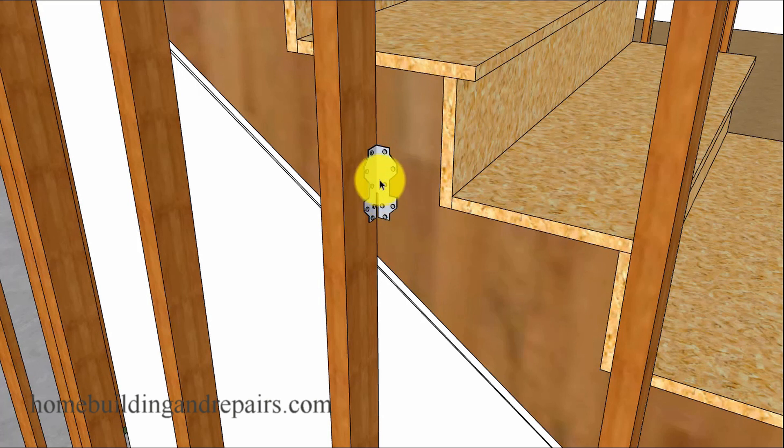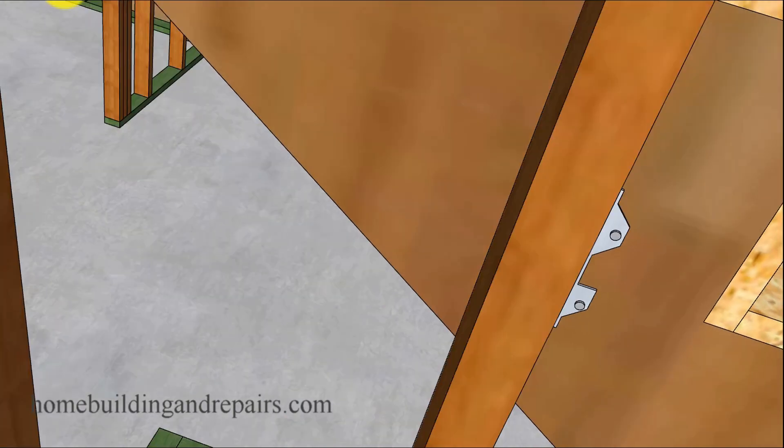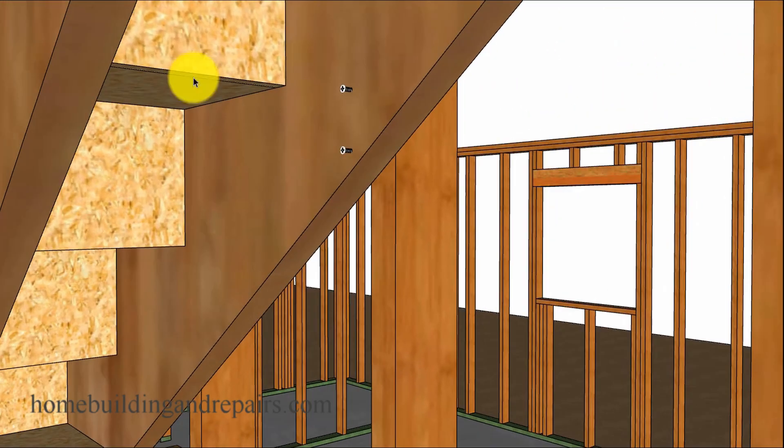That would be to simply attach some type of a framing anchor to it like we have here or even nail it. It was common just to toenail the wall stud into the stringer or you could use screws to attach it.